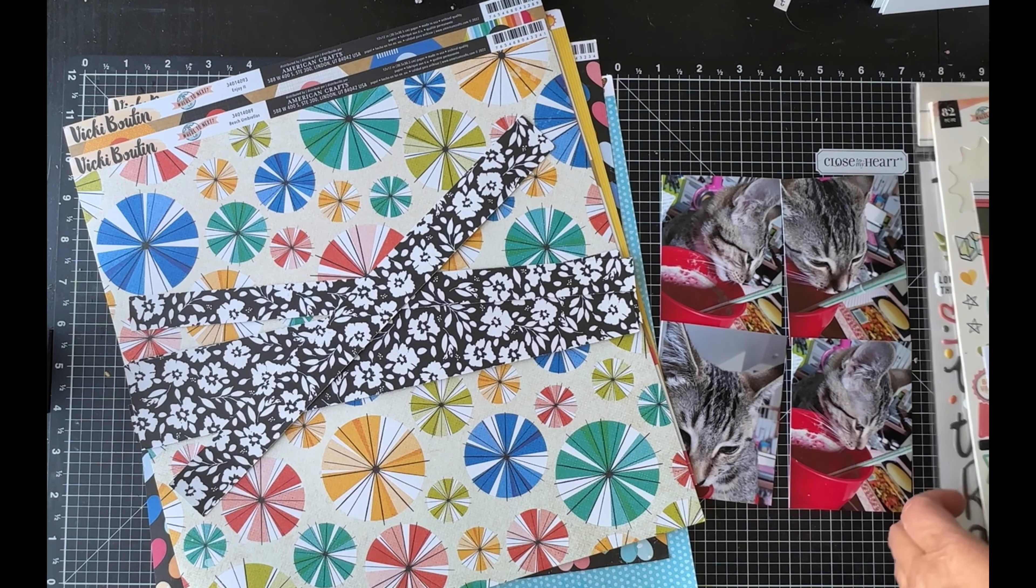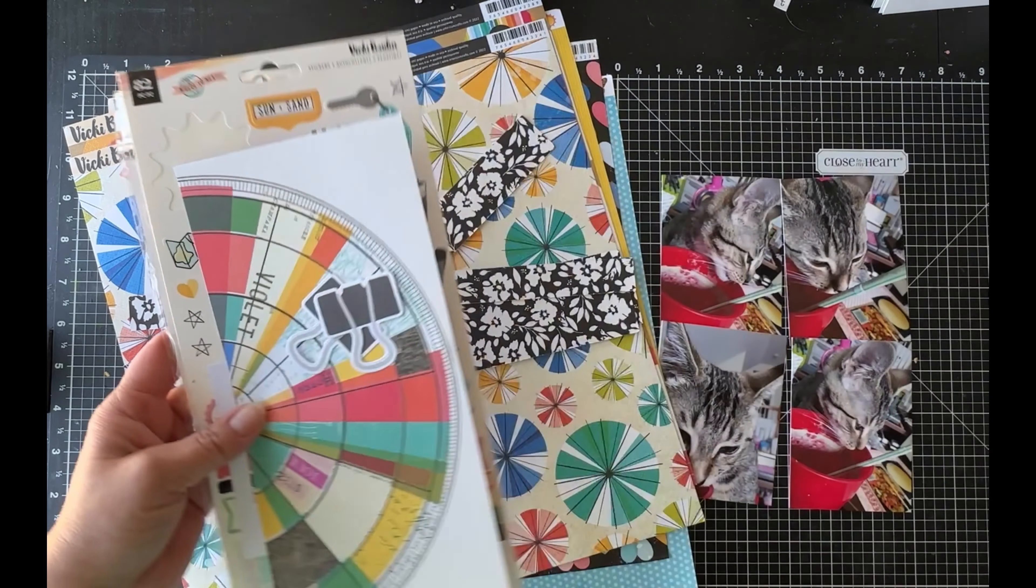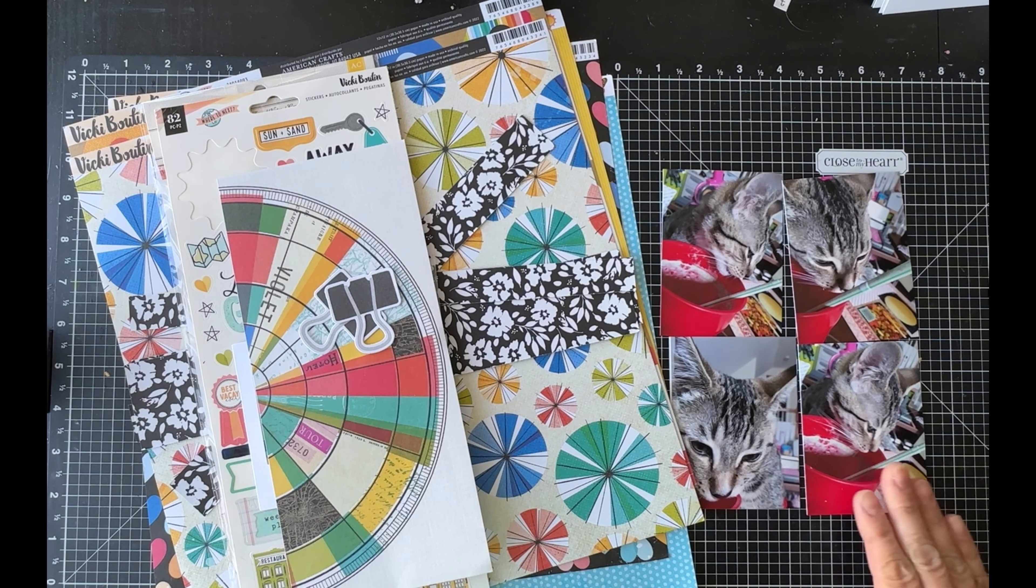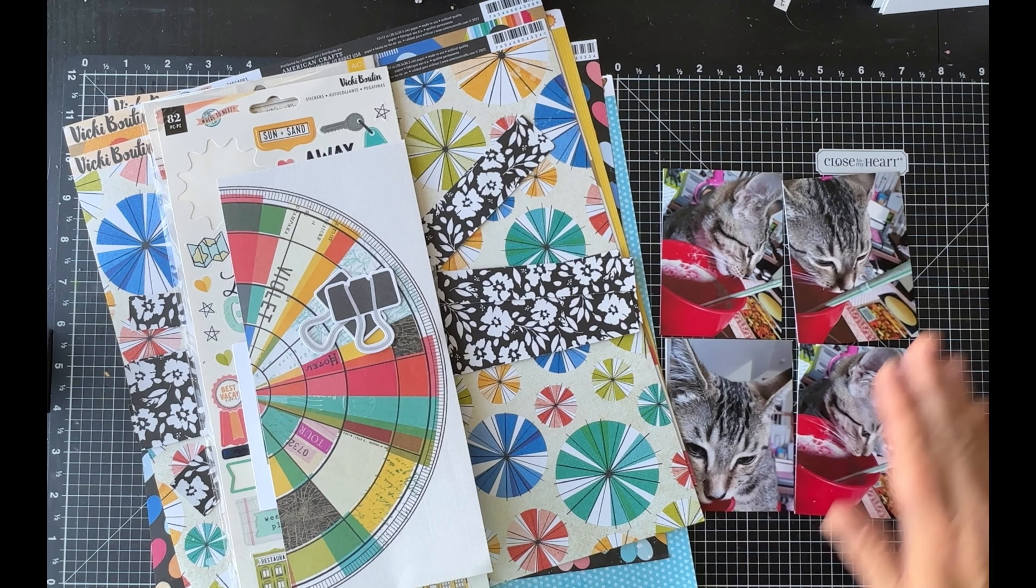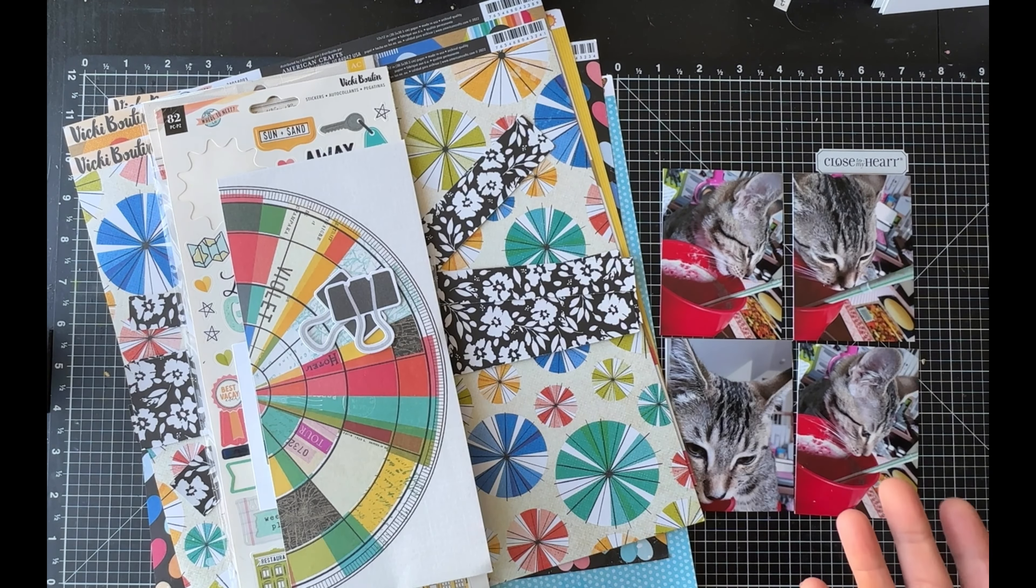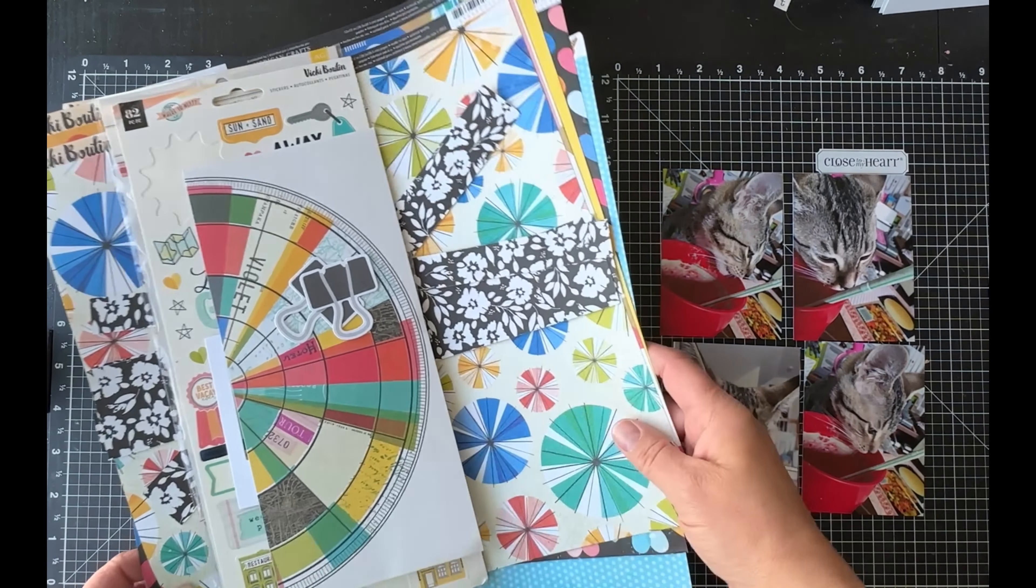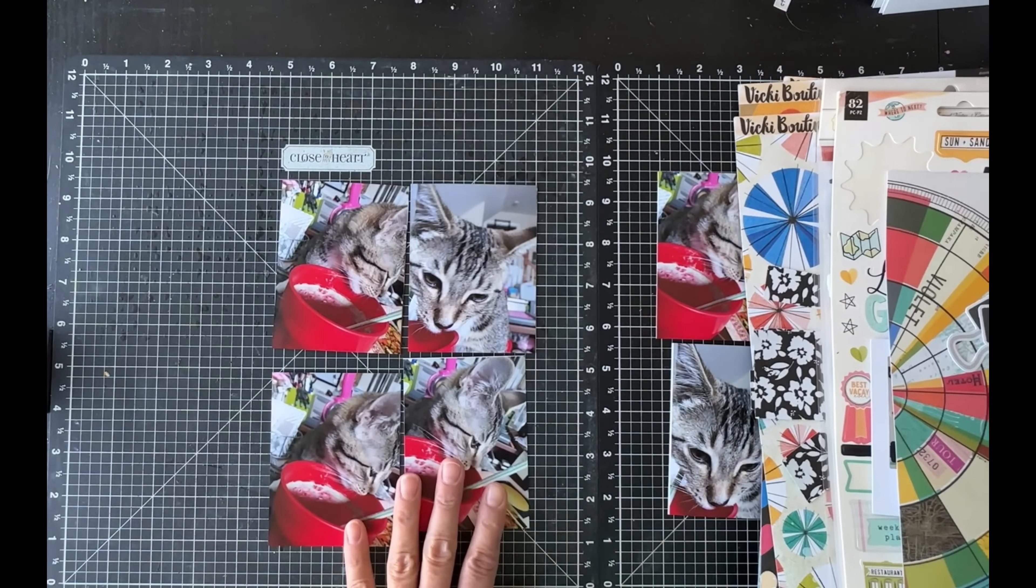Welcome to the Paper Snob, this is Tara. Today I'm working on 30 Days of Sketches Series 16, Day 17. I'm also working on Paw Your Way Into Our Hearts, which is a hop about pets, and I have some photos of my kitten here again. I am using photos that I have already printed, so my orientation is different.